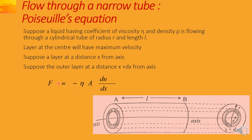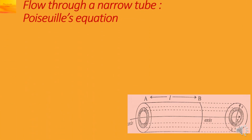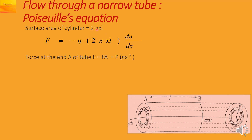We will write down the formula seen in the earlier video: F is equal to minus eta into A into du by dx — this is the viscous force. The surface area of the cylinder is written as 2 pi R h, so for this layer it becomes 2 pi x L. Substituting this area into the formula gives F equal to minus eta into 2 pi x L into du by dx.